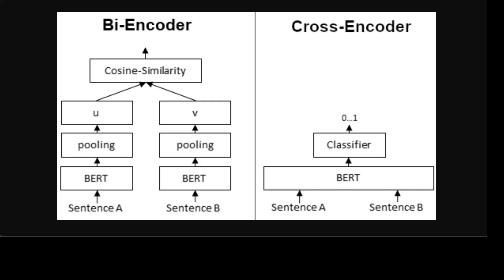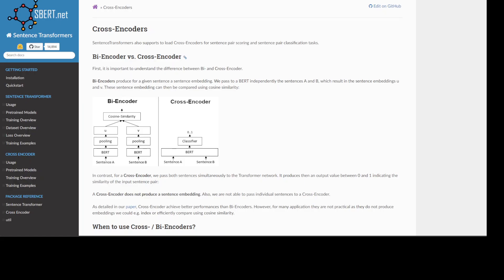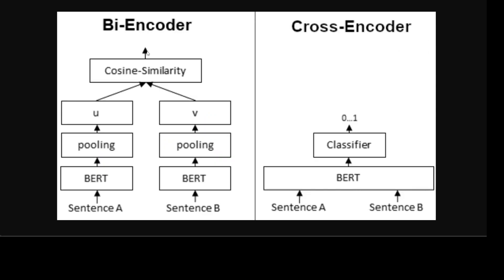Hello everyone, and a very warm welcome to the channel. I was reading through the SBERT website online and came across the difference between bi-encoder versus cross-encoder, and I thought why should I suffer alone. This video is a theoretical, conceptual video where I will try to explain in layman terms, without any machine learning mumbo jumbo or esoteric concepts, what exactly is the difference between these two terms. These terms normally pop up whenever we are doing retrieval augmented generation or dealing with embeddings.